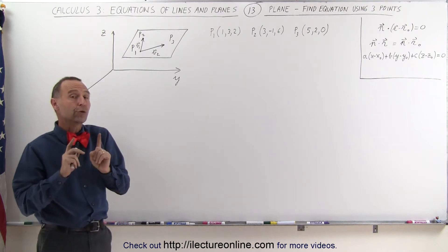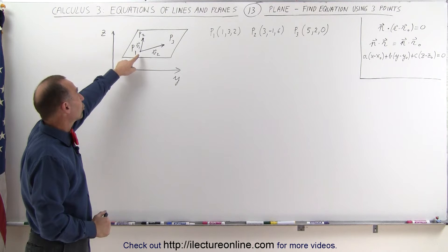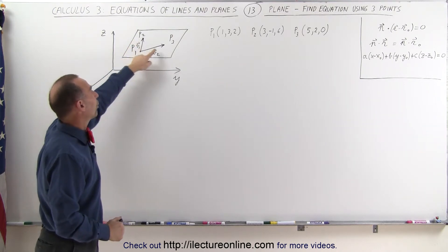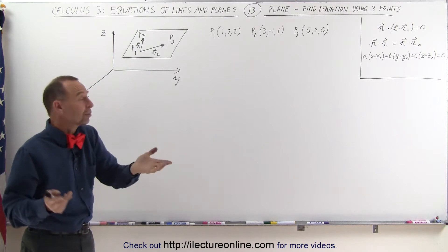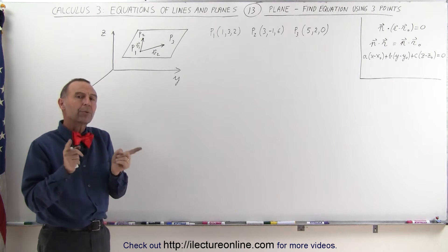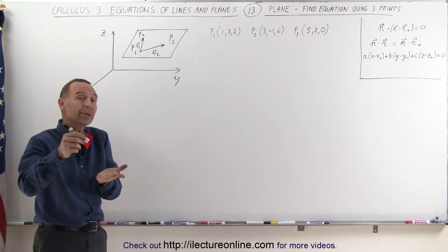Now normally we need one point and the orthogonal vector, the normal vector to the plane. But if we're given three points, how do we find the equation? We're going to use those three points to come up with the orthogonal vector. We're going to draw a vector from point 1 to point 2 and a vector from point 1 to point 3. Notice that those two vectors, called v1 and v2, lie in the plane. If we then do a dot product with those two vectors, we'll get a third vector which will be perpendicular.